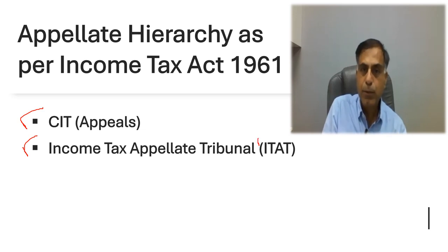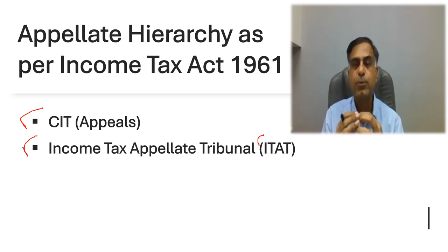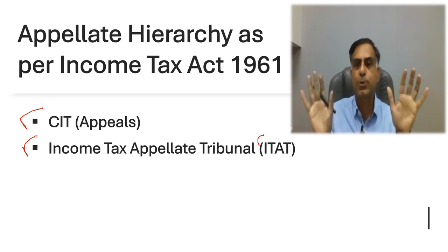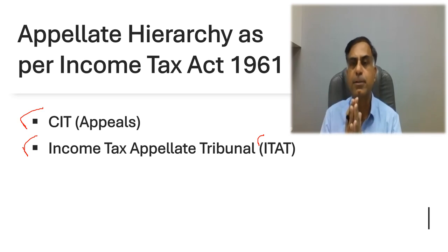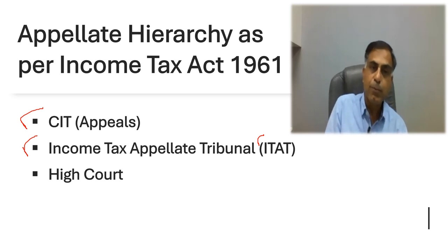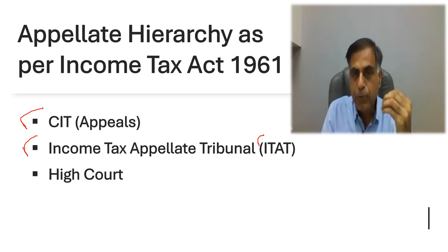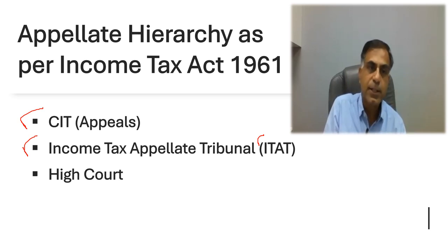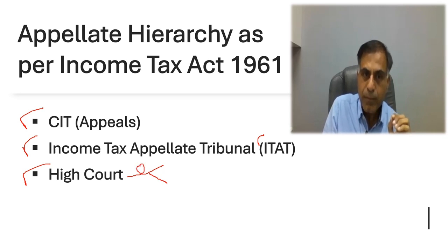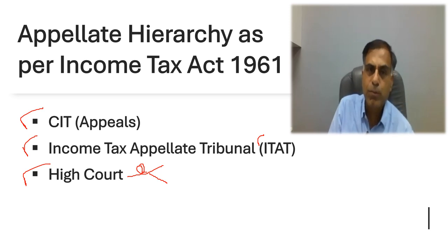Suppose CIT Appeal has not given you the favour, then you can file an appeal before the Income Tax Appellate Tribunal (ITAT), which is an independent forum. CIT Appeal is an Income Tax Authority — their upbringing has happened within the Income Tax Department but they are quasi-judicial authorities. But ITAT is independent of the Income Tax Department, and this forum is very important particularly in terms of a question of fact, because whatever ITAT decides on a question of fact is a final decision. If the Assessee has won before CIT Appeal but could not win before ITAT, or has lost at both stages, then a further appeal may be filed before the Honorable Jurisdiction High Court.